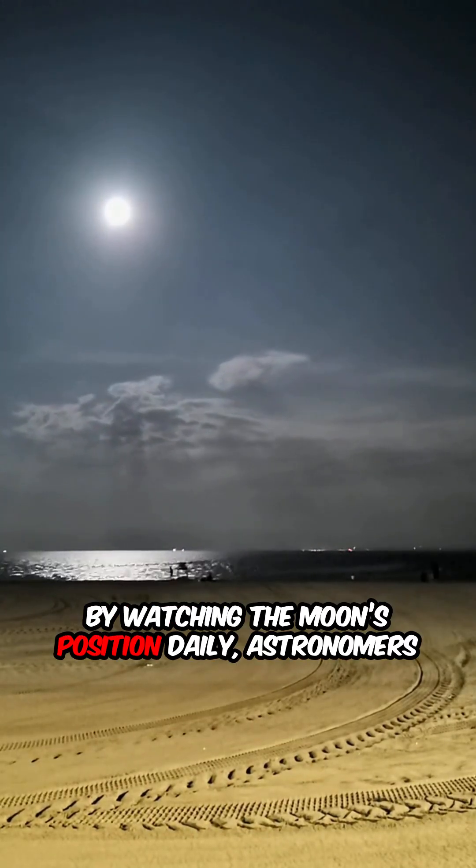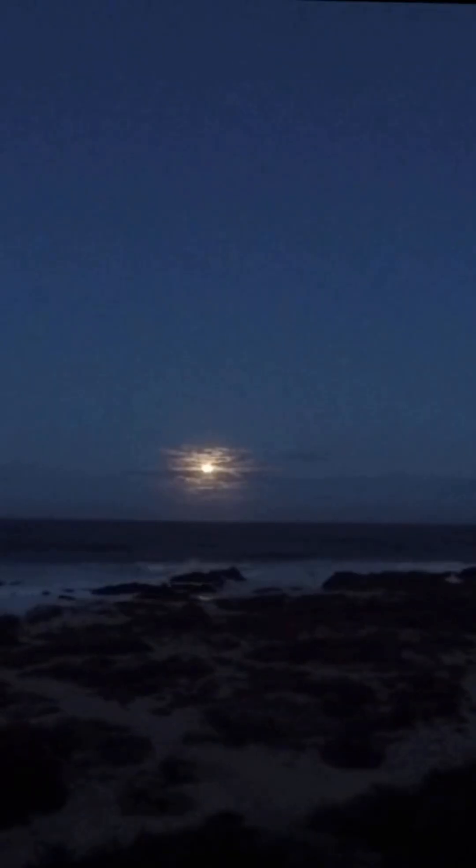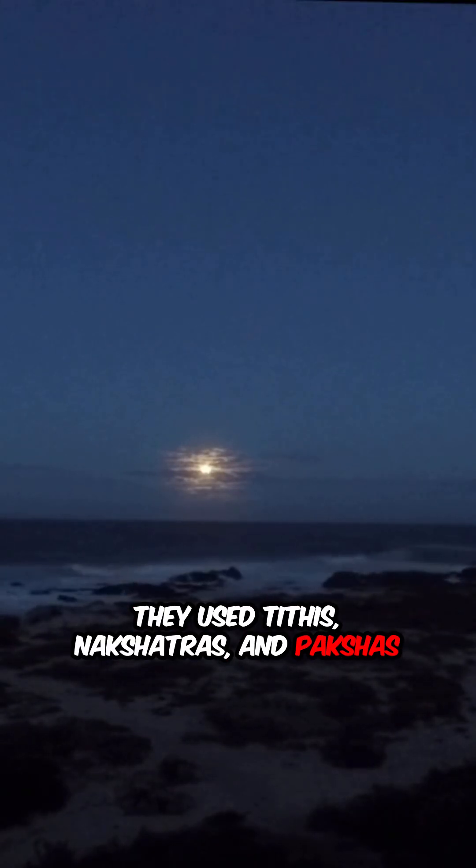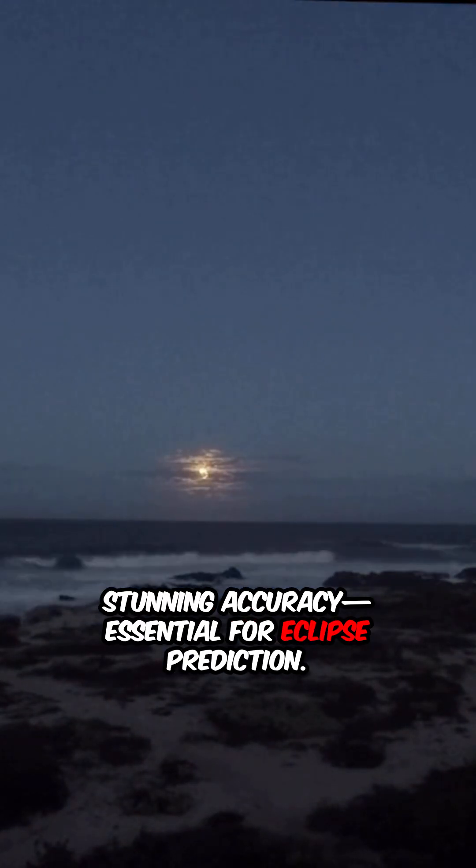By watching the moon's position daily, astronomers built detailed models of its orbit. They used Taithis, Nakshatras, and Pakshas to track the moon's motion with stunning accuracy, essential for eclipse prediction.